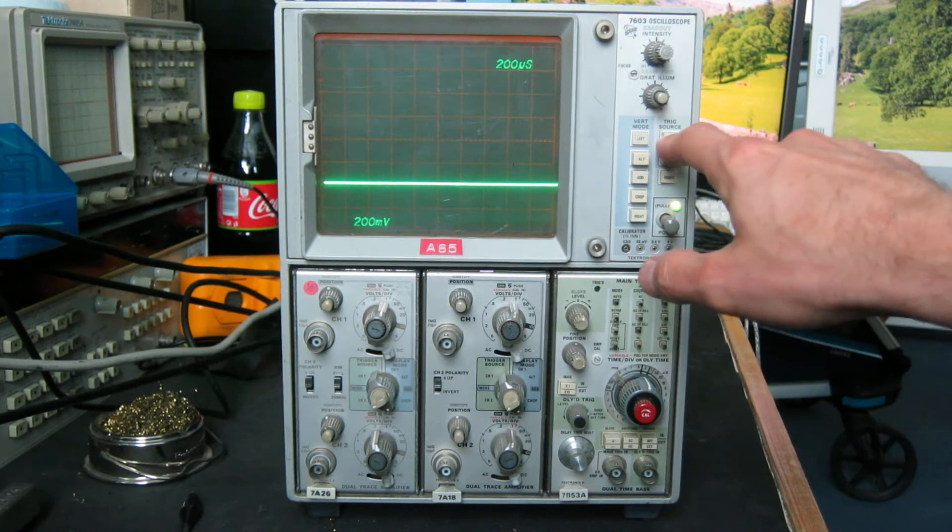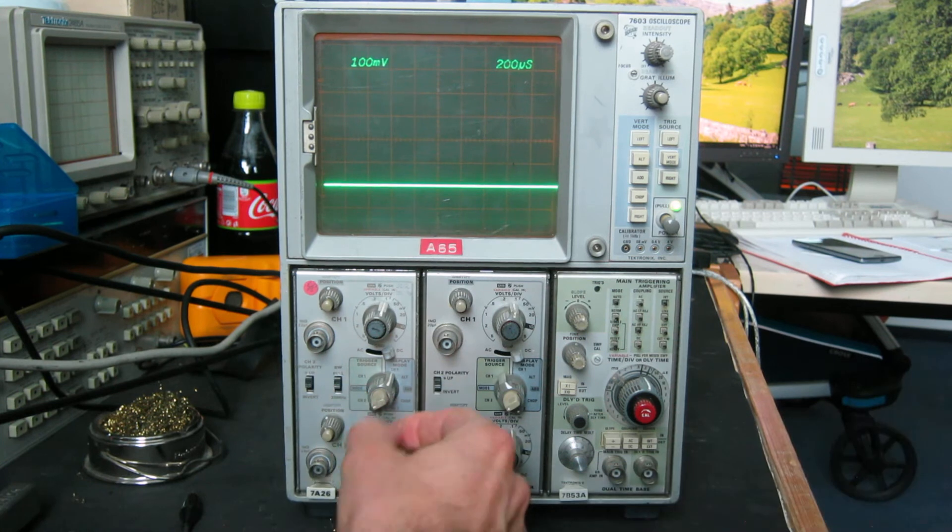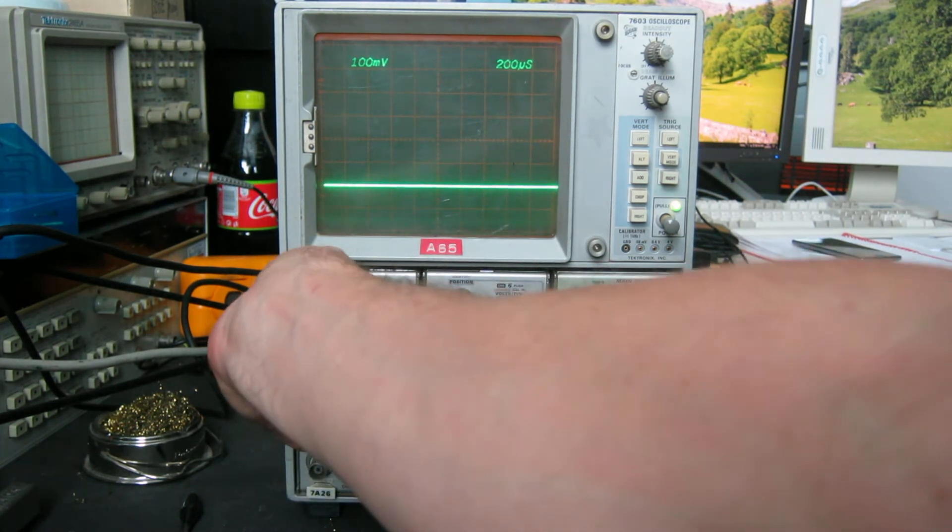We'll go for the left vertical slot, the left trigger source, and we'll use channel 1 for want of a better choice. There we go, that's that one.